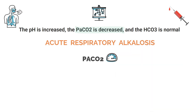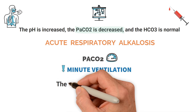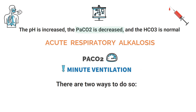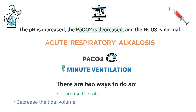In order to correct the problem, we need to increase the PaCO2, and to do so you must decrease the minute ventilation. In general, there are two ways to decrease the minute ventilation: you can either decrease the rate or decrease the tidal volume.